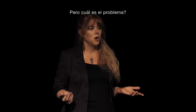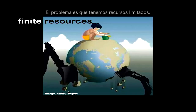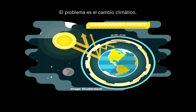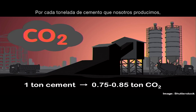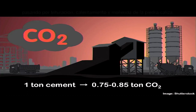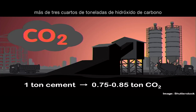So what's the problem? The problem is finite natural resources. The problem is acidification of our oceans. The problem is climate change. For every tonne of cement that we produce, through the crushing, heating, and grinding of limestone, over three quarters of a tonne of carbon dioxide is released into our planet's atmosphere.